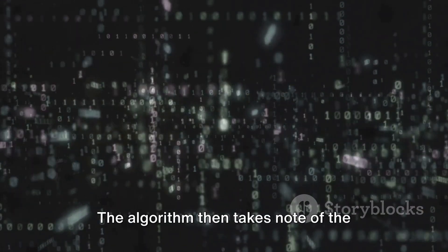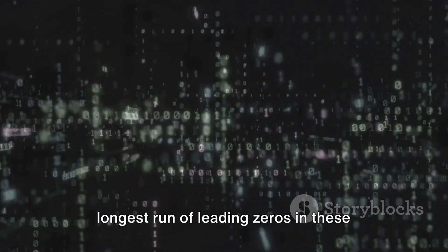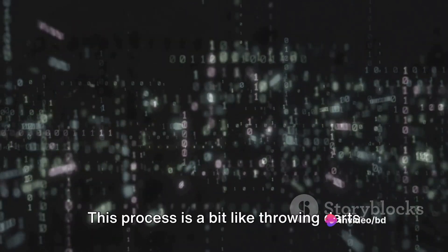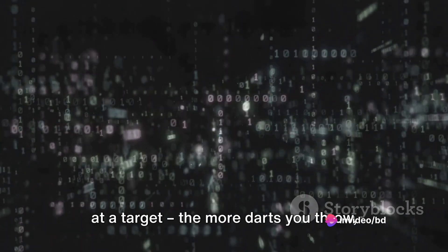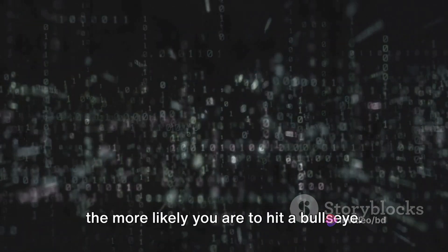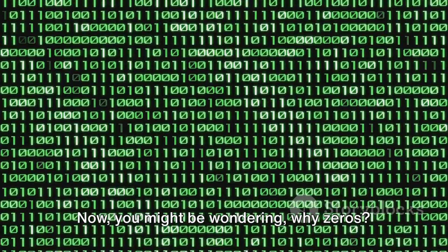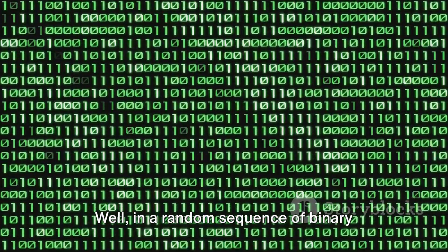The algorithm then takes note of the longest run of leading zeros in these binary strings. This process is a bit like throwing darts at a target. The more darts you throw, the more likely you are to hit a bullseye. Now, you might be wondering, why zeros?